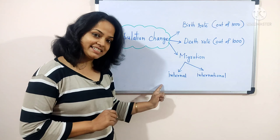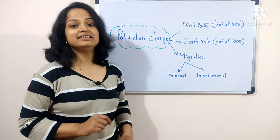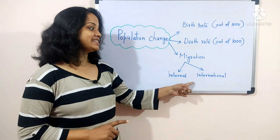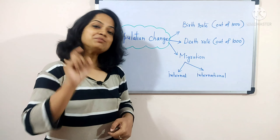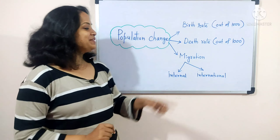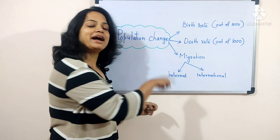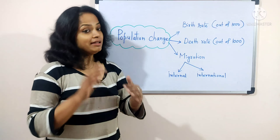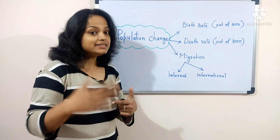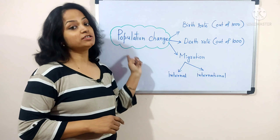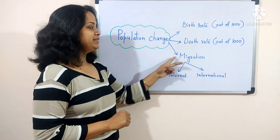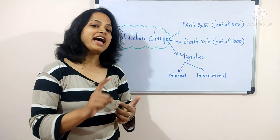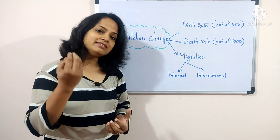Migration means the movement of people. There are two types: internal migration, when a person moves within the same country, and international migration, when a person moves from one country to another — you can also find the term 'immigration', especially at international airports. For internal migration, there is no change in total population count since the person remains within the same country's census. Population change only occurs when a person moves to another country.